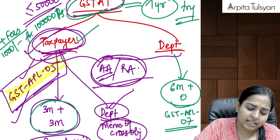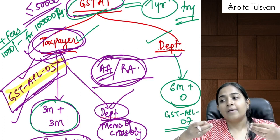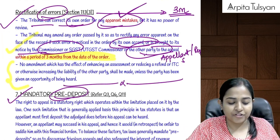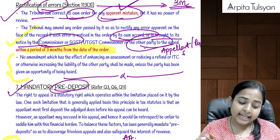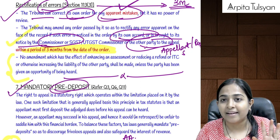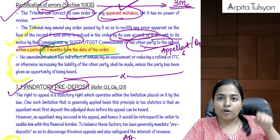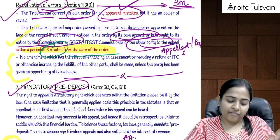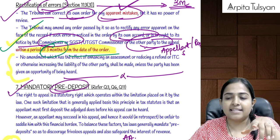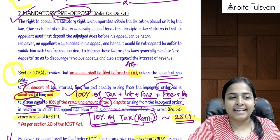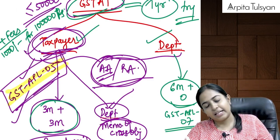If there is any error clearly evident in GSTAT's order, either party can apply for rectification. GSTAT can rectify its own order within three months from the date of the order. No fees apply for rectification. If the tax liability increases due to rectification, the taxpayer must be given an opportunity of being heard before the final order.